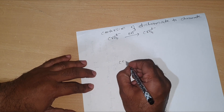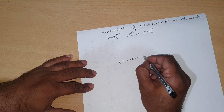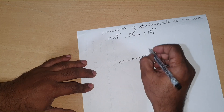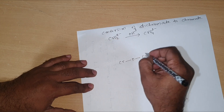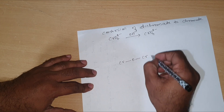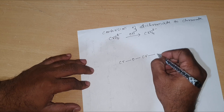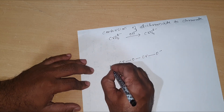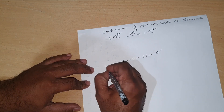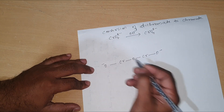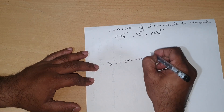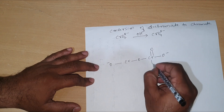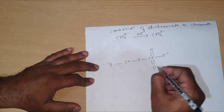Now I am going to explain by drawing the structure of dichromate. Dichromate has an oxygen bridge between the two chromium atoms, and there are single-bonded oxygen atoms carrying a negative charge, as well as two other oxygen atoms having double bonds on each chromium.